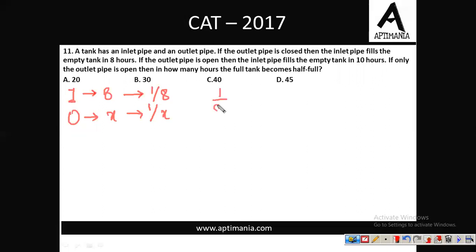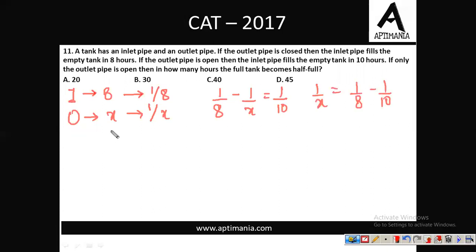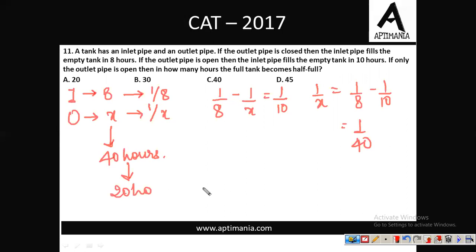Working together, the equation is 1/8 − 1/x = 1/10, since the outlet pipe does negative work. Solving, 1/x = 1/8 − 1/10 = 1/40, meaning the outlet pipe takes 40 hours to empty the tank completely. Since the question asks how long for the outlet pipe alone to make a full tank become half full, we need to empty only half the tank, so the answer is 20 hours. The correct answer for question number 11 is option A, 20 hours.